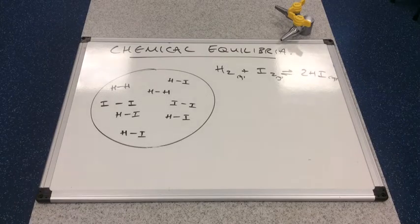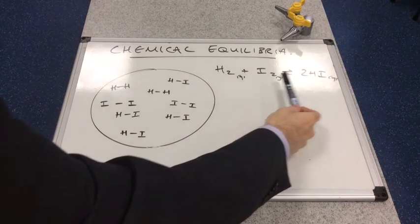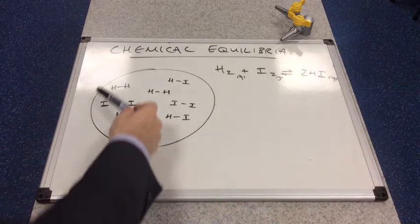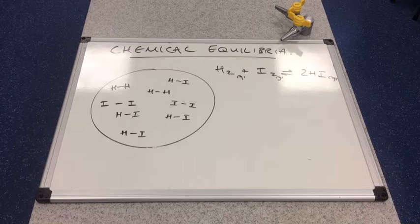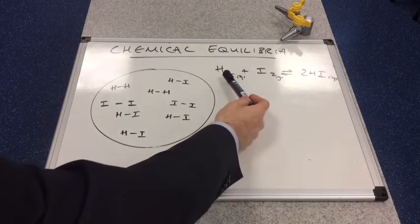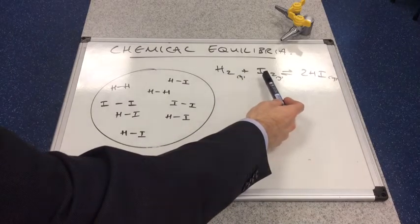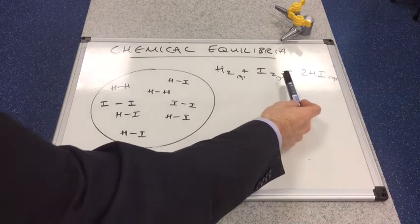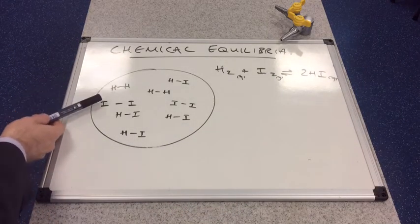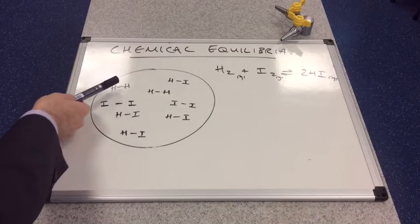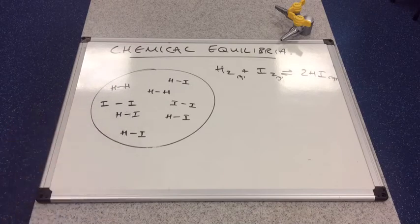If we imagine all these gaseous substances inside this sealed container, if we consider the forward reaction first, we have the H2 molecule reacting with the I2 molecule making two moles of HI. So H2, I2, and there's two HIs there. You could say there's the forward reaction.